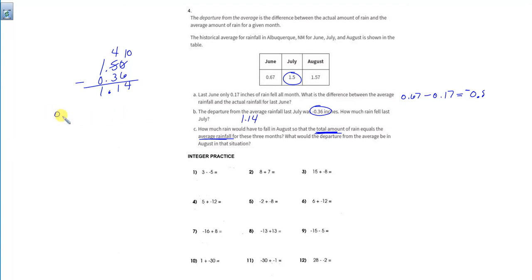That would be 0.67 hundredths, 1.5, and 1.57 all together. So that's 4, 1, 16, 17, 3.74. Okay, this is how much we expect for all three months.